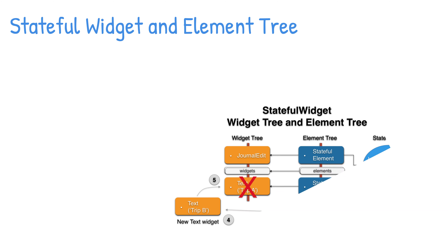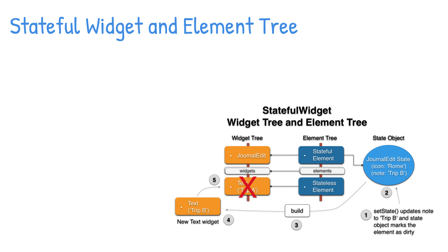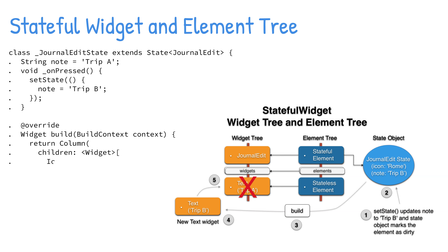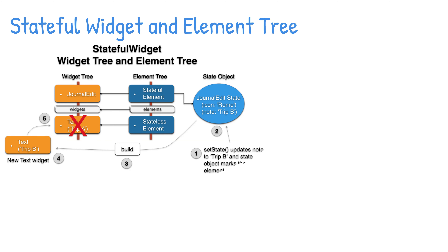For example, you have a stateful widget JournalEntry class, and in the state object class, you call the setState method to change the text widget description from trip A to trip B by setting the note variable value to trip B. The state object note variable is updated to the trip B value. The state object marks the element as dirty, and then the build method rebuilds the UI children's widgets. The new text widget is created with the new trip B value, and the old text widget with the trip A value is removed. Since both the old and new widgets are both text widgets, the existing element updates its reference to the new widget, and the element stays in the element tree.